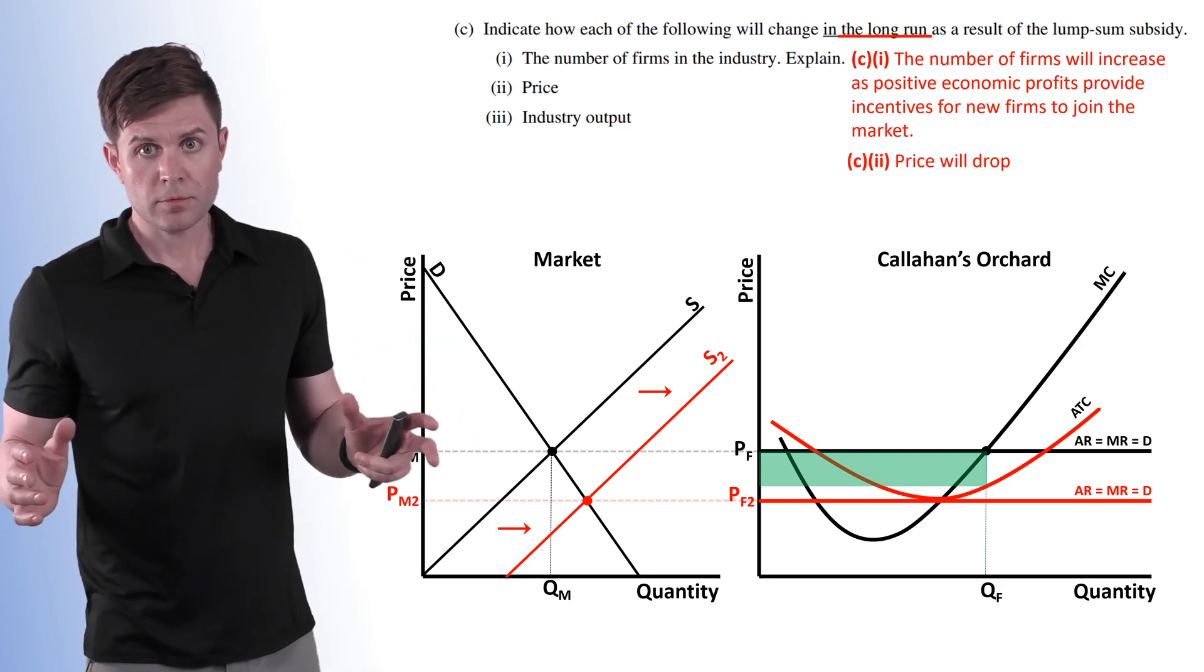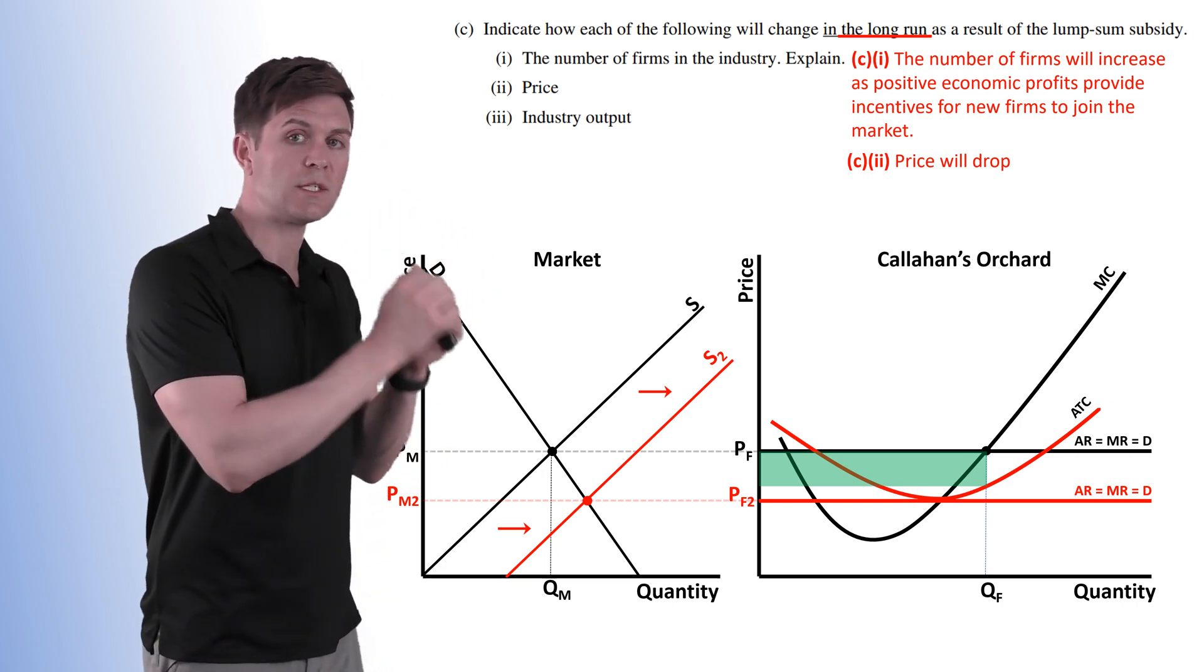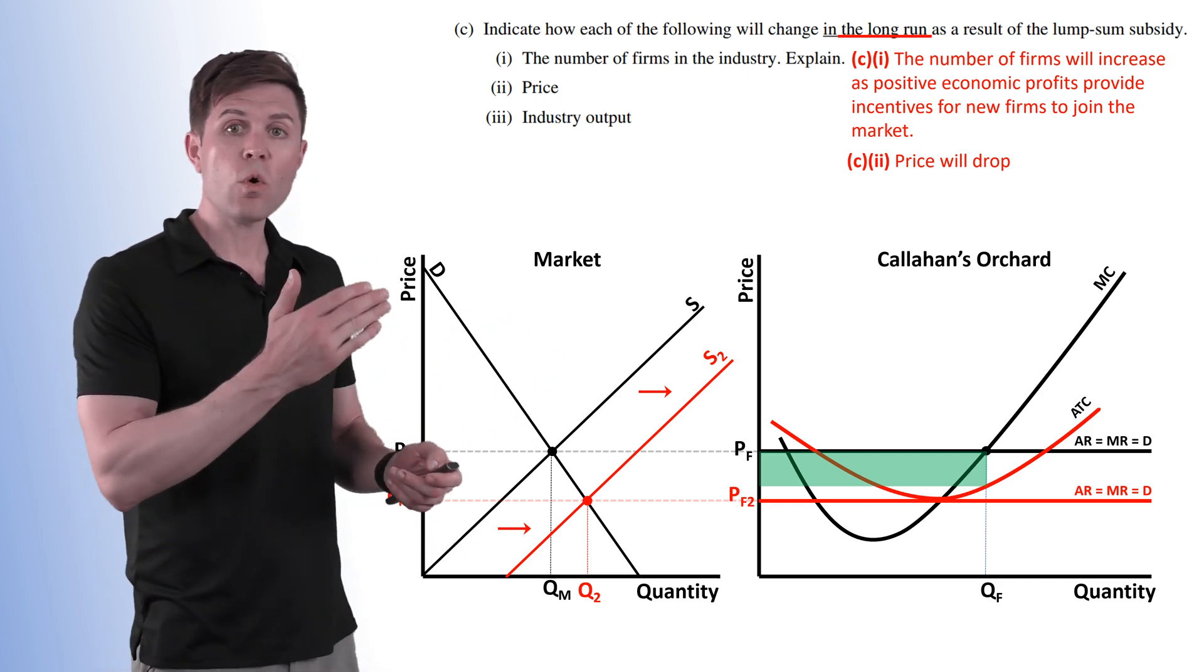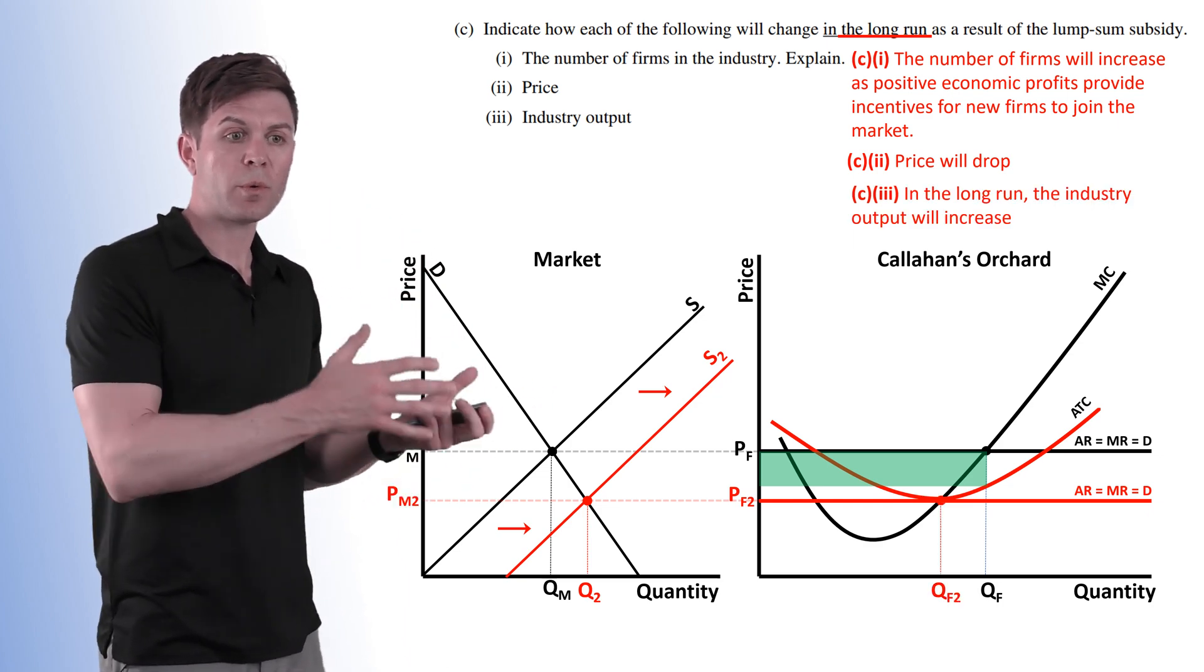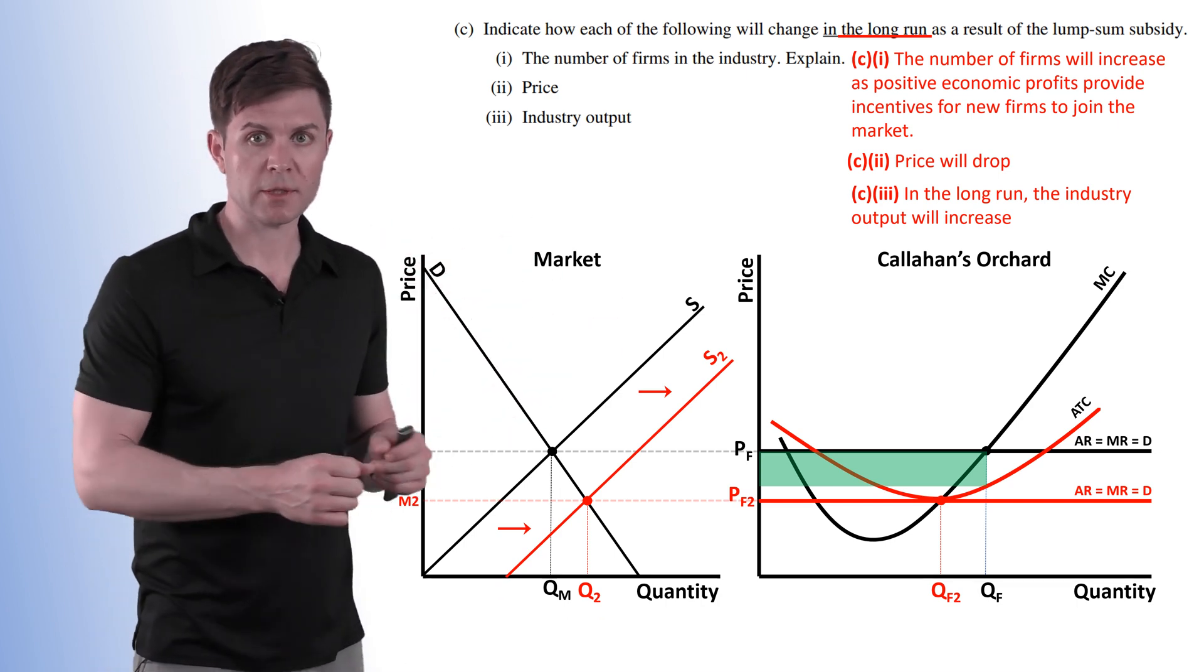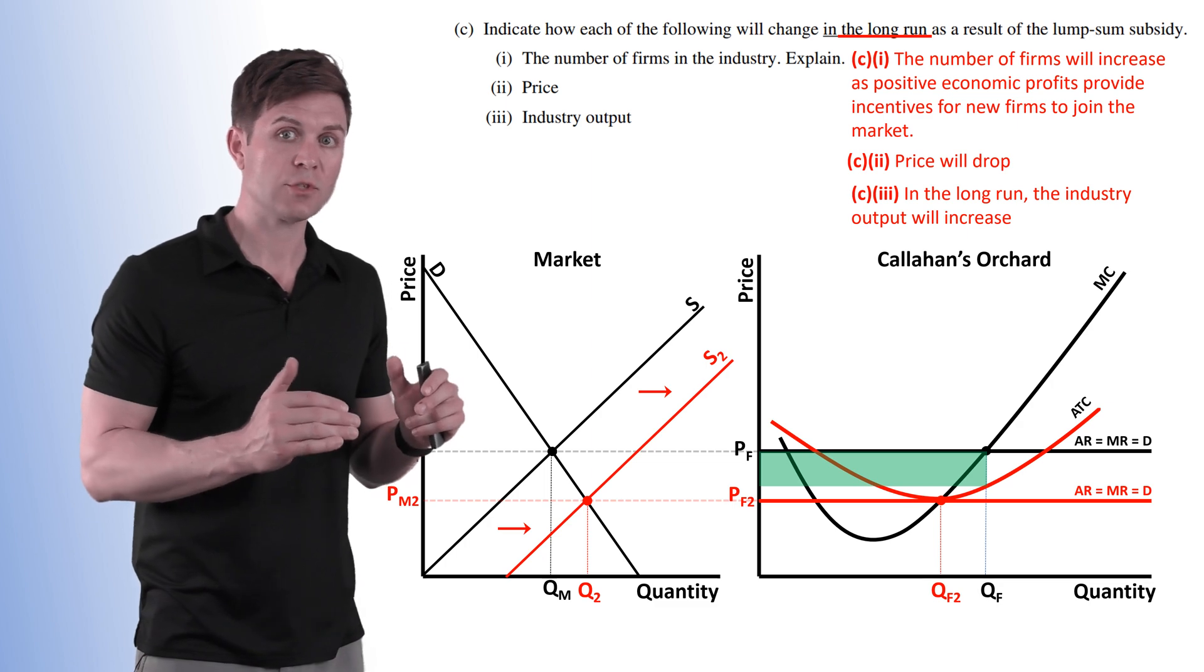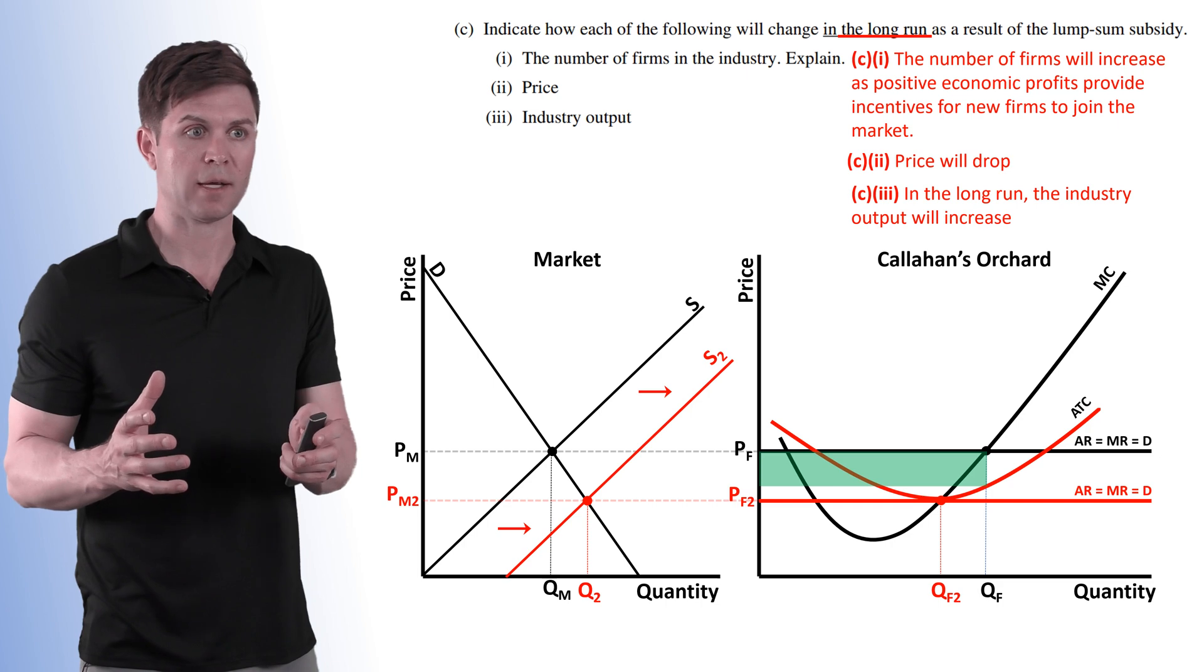What will happen to the industry output? Now, it's important when it says industry output, we want to look at the industry output. So when we look over here on the market side, we see that the quantity has increased. If we go over to Callahan's, we'll see that the quantity actually decreased from where we were at before, but we have new firms joining the market. That lower price might drop Callahan's quantity, but it's going to increase the entire market. So make sure you're paying attention to, is it the industry? Is it the market? Or is it the individual firm? How will they be affected?